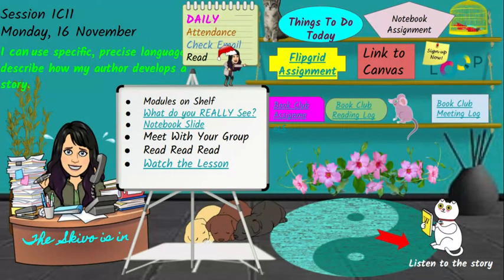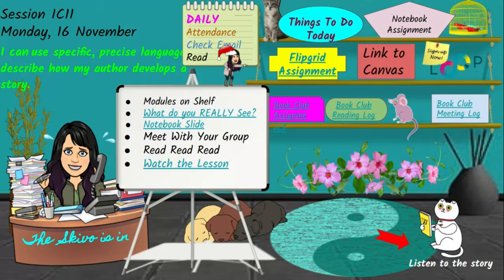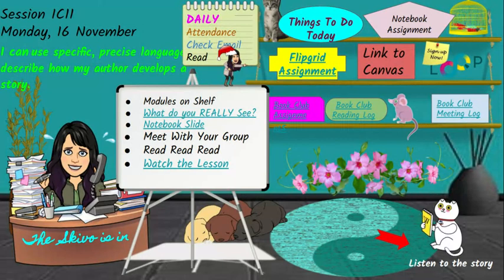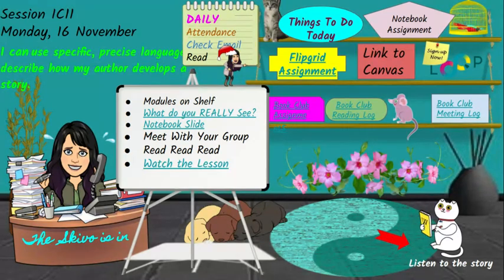On our list of things to do on the bookshelf, you have a notebook assignment this week and a FlipGrid assignment this week. There will be a link set up in Canvas so you can see those assignments. Also, Loop is still there because most of you have not bothered to do that. For everyone who is signed up and active in Loop, you're going to get bonus points. If you're not signed up in Loop, you might want to do that because you probably need points.